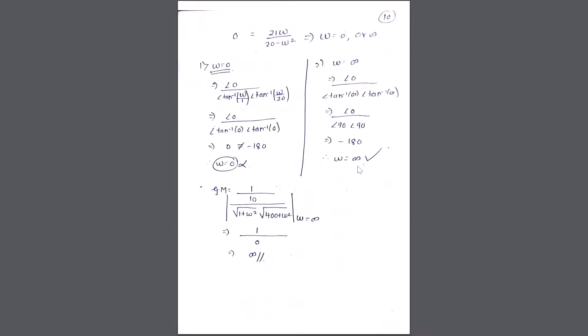Since ω_pc = ∞, we now evaluate the gain margin as 1 upon |G(jω)·H(jω)| at ω = ∞ and compute the value accordingly.